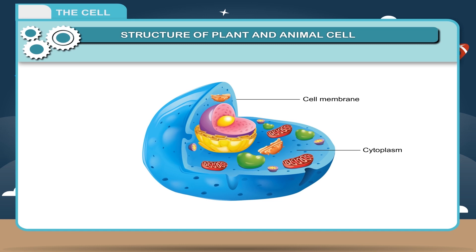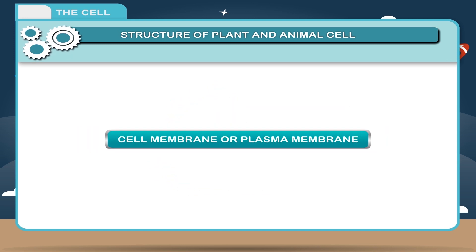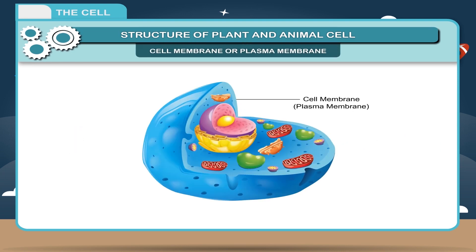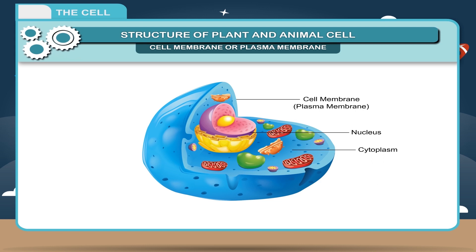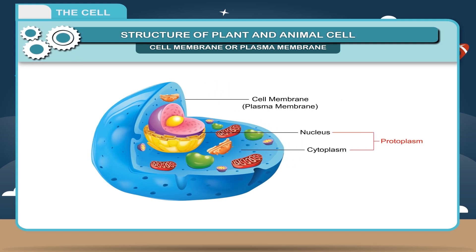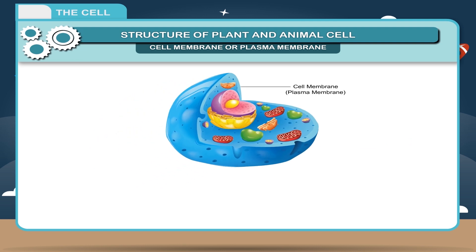Cell membrane or plasma membrane. It is a thin, transparent and flexible living membrane which forms the outer boundary of the cell. It surrounds the protoplasm. Cytoplasm and nucleus together constitute the protoplasm, and it is composed of lipids, fatty molecules and proteins.